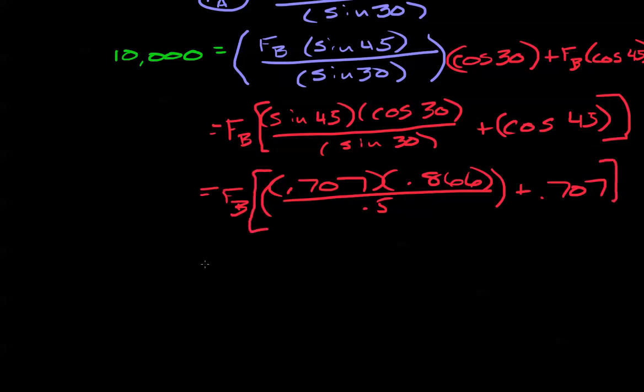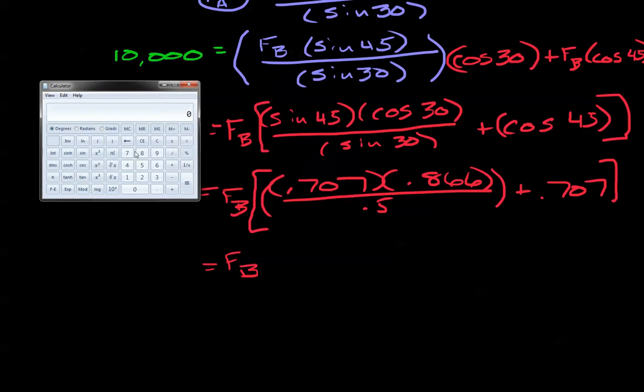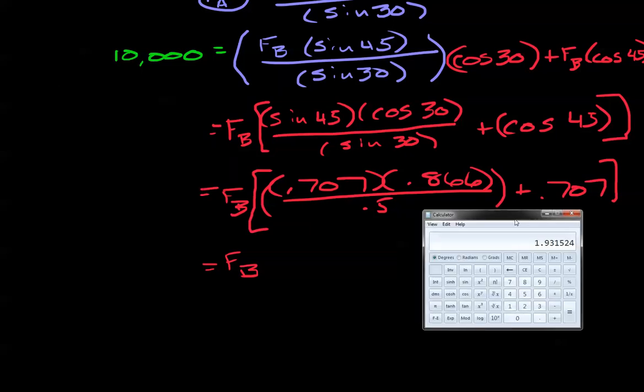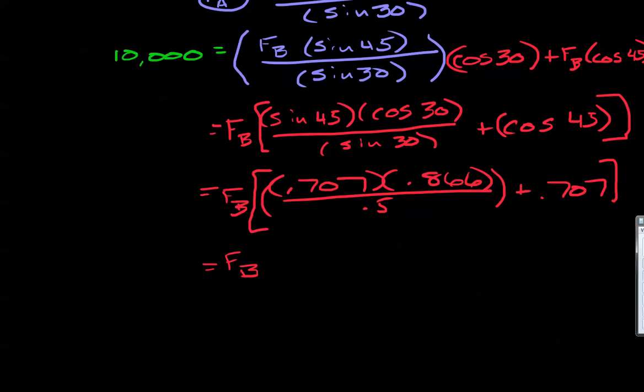Now, the next thing that I'm going to do is, the reason I chose 30 and 45 degrees is because these are common numbers that you should just know. So, 10,000 equals force B, and you should know that the sine of 45 is 0.707, you should know that the cosine of 30 is 0.866 over 0.5 plus 0.707, that's the cosine of 45. These are numbers you're going to use, you just need to know. So, commit them to memory now.